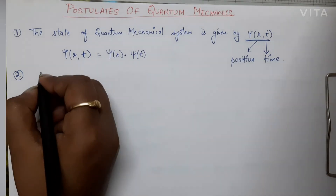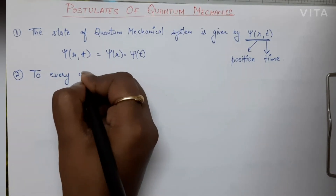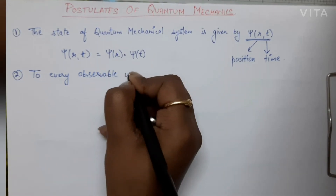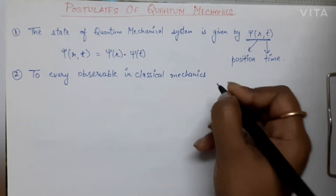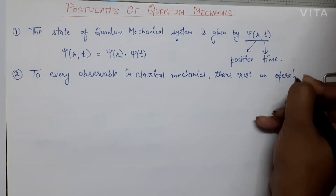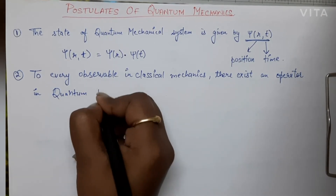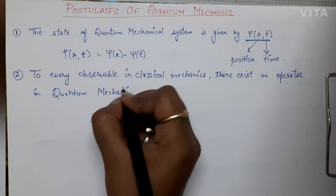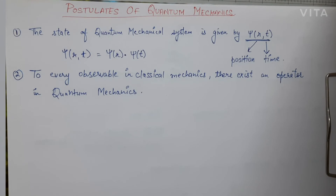The second postulate, which we have discussed earlier, states that to every observable in classical mechanics there exists a corresponding operator in quantum mechanics. We have discussed various observables and their corresponding operators in earlier videos. Every classical observable has some sort of an operator in quantum mechanics.